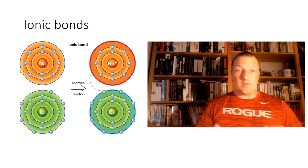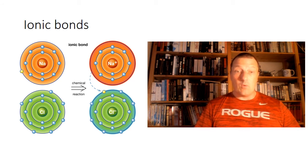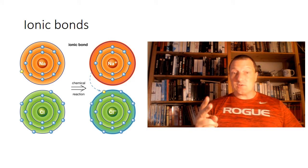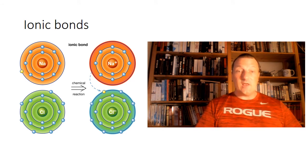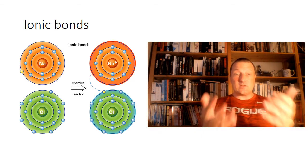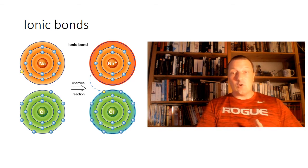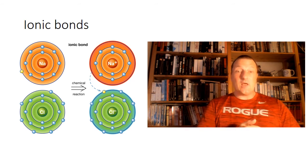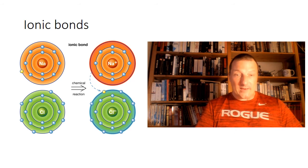An ion is an atom that either gained or lost one or more electrons. If an atom loses electrons, it loses a negative charge, so it becomes more positive. If it gains electrons, it gets more negative charges and thereby becomes more negative. So when sodium loses an electron, it becomes sodium plus. And when chlorine gains an electron, it becomes Cl minus.